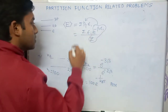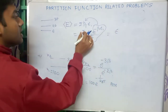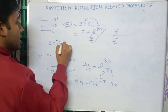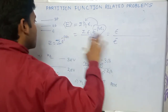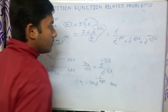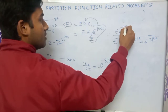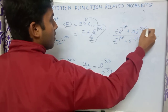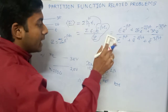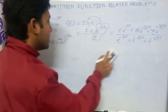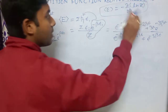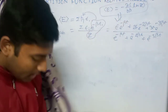Breaking down the summation, the numerator is epsilon times e to the power minus beta epsilon, plus 2 epsilon times e to the power minus 2 beta epsilon, and so on. Another method to find the average energy is to compute minus del by del beta of ln z, which gives the same result.